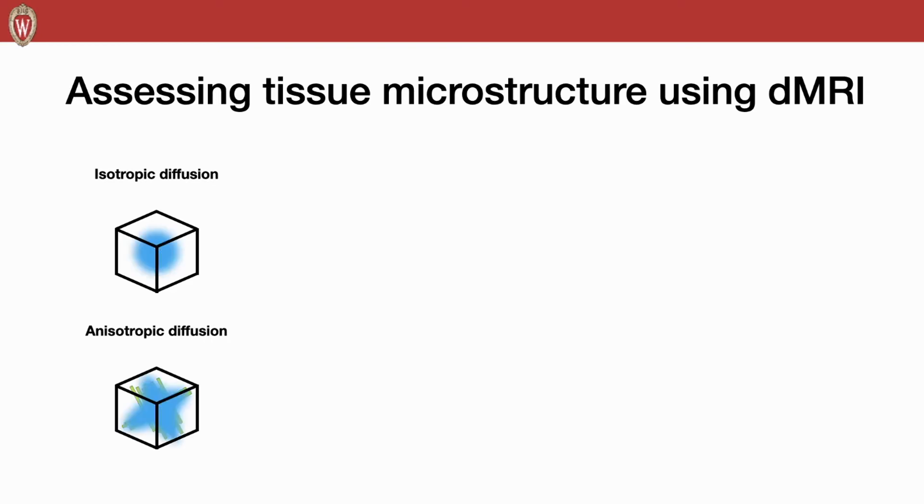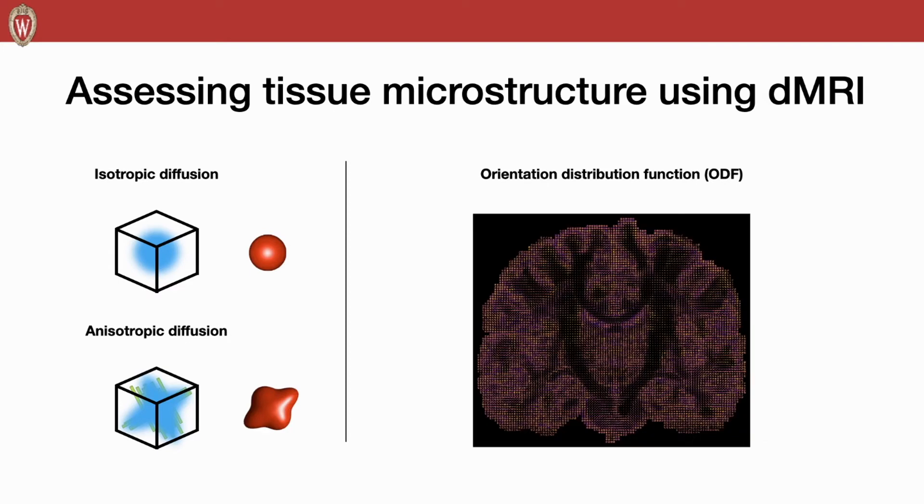In this case, we can use a distribution function over the sphere to measure the probability of the water molecules to diffuse along that direction. If there's no fiber, the distribution may be like a uniform distribution. If two fibers cross each other, there may be four peaks over the distribution function. Similar to DTI, if we measure the distribution function at each location inside the brain, we can get the orientation distribution function, called ODF.